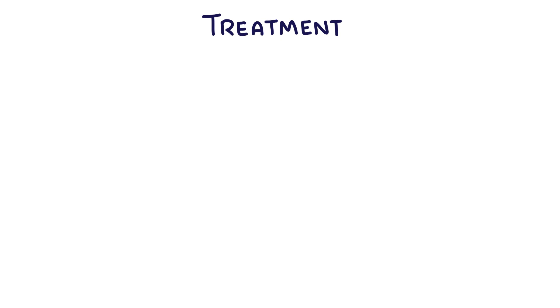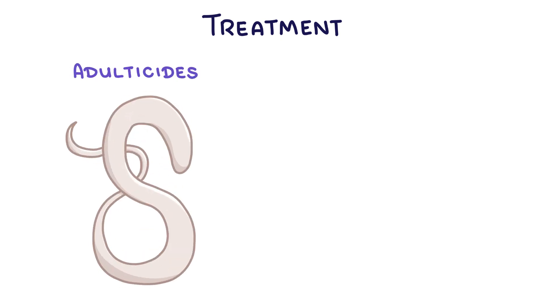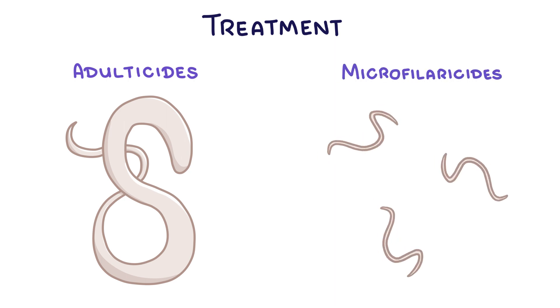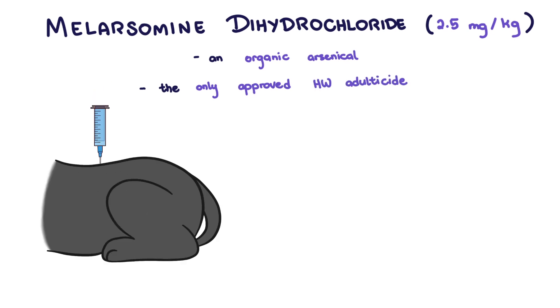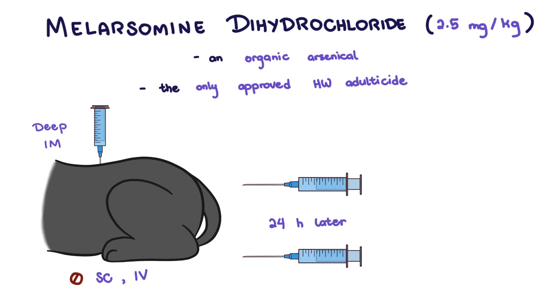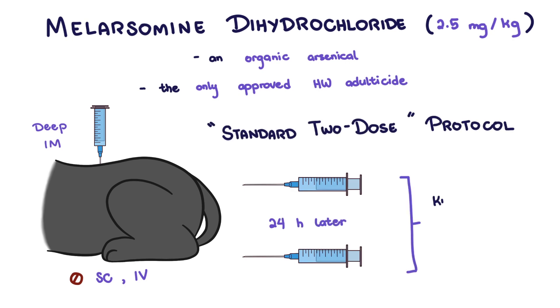Heartworm medications can be subdivided based on which life stage of the heartworm they kill. Adulticides target adult heartworms, and microfilaricides target microfilariae. Melarsamine dihydrochloride is an organic arsenical and the only approved heartworm adulticide. It is injected intramuscularly into the lumbar muscles of the dog — deep IM, which is really painful. The dog's hips must be properly restrained so they don't move during administration. Subcutaneous and intravenous injections must be avoided. This is repeated 24 hours later on the opposite lumbar muscles for the standard two-dose protocol to kill almost all of the adult worms.